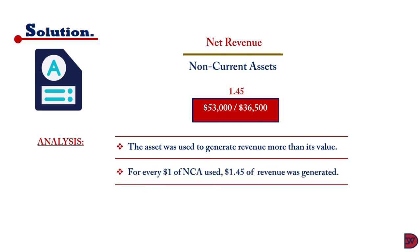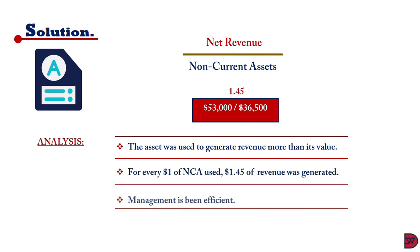For every one dollar of non-current asset used, a sales revenue of 1.45 was achieved — meaning 45 cents in excess of the asset's value. This also indicates that management has been efficient in utilizing the assets, assuming nothing irregular had taken place.